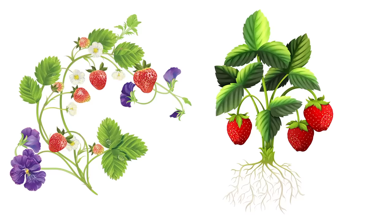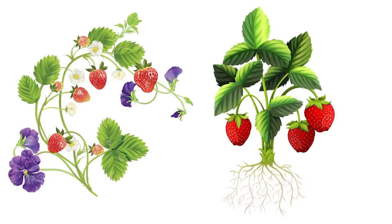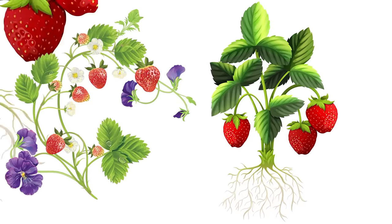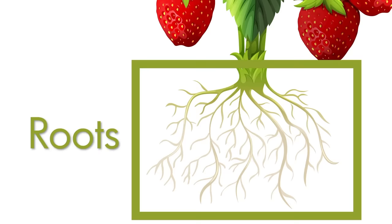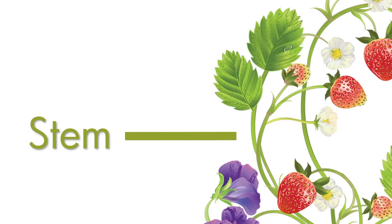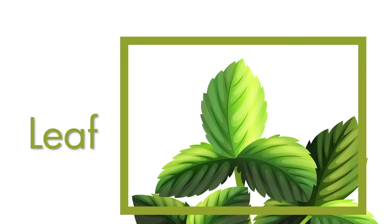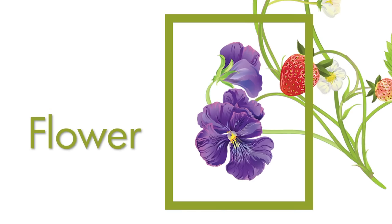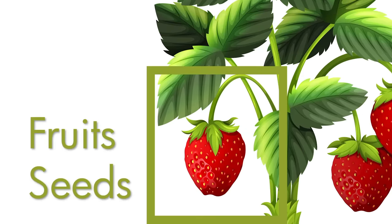Here are the basic parts of every plant: the roots, the stem, the leaves, the flowers, the fruits and the seeds.